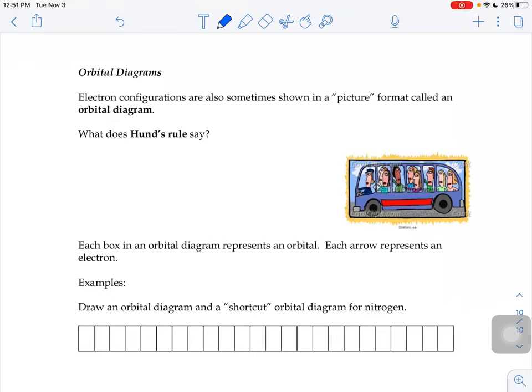Our last thing to learn for today is how to do something called an orbital diagram. This is kind of a picture format of an electron configuration. So we're going to learn one more rule and then apply that rule to these orbital diagrams.